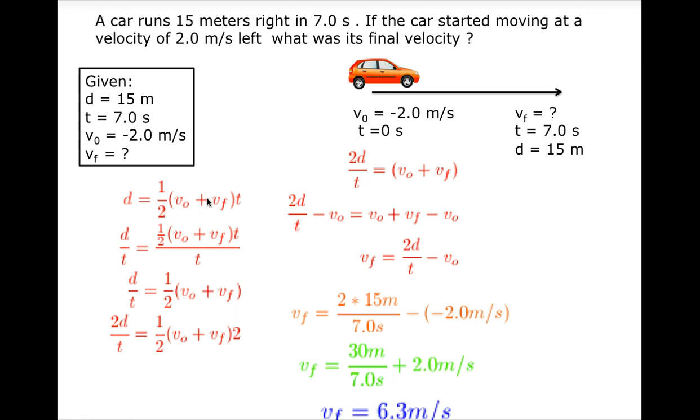Because we have to find out the final velocity in this equation, we convert it into the equation which is related to the final velocity. So here is another equation which is: final velocity equals 2 times distance divided by time minus initial velocity.